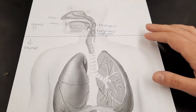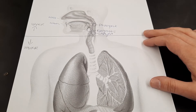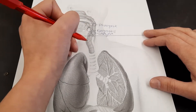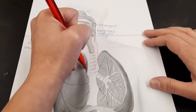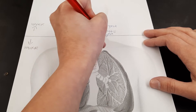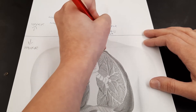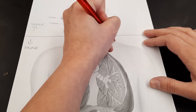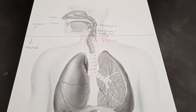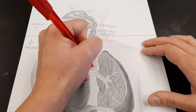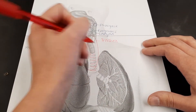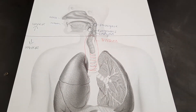Now we're going to look at the structures of the lower respiratory system, starting off with this area here which is our trachea. Our trachea is also known as our windpipe, and it is wrapped in bands of hyaline cartilage which help to provide support and structure.